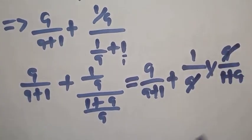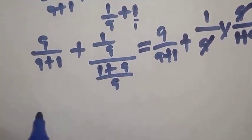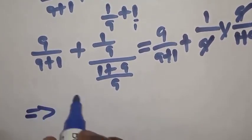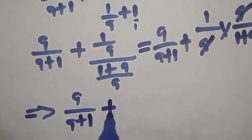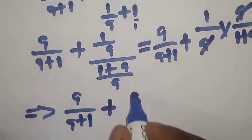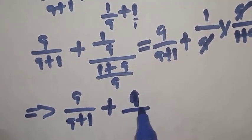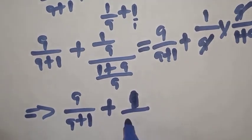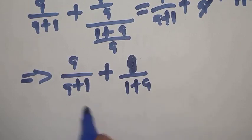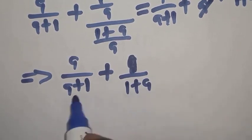1 over A times A over 1 plus A, this one will cancel. This implies we have A over A plus 1 plus 1 over 1 plus A. Let's find the LCM. The common denominator is A plus 1, which is the same as 1 plus A.